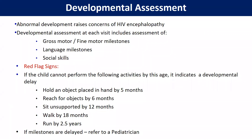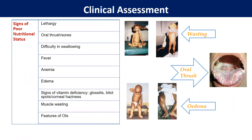There are some red flag developmental signs — if a child cannot hold an object placed in the hand by five months, or cannot reach out for an object by six months, or cannot run by two and a half years. These are all red flag signs and should be taken care of. If not detected early, the child will be developmentally delayed. So if developmental milestones are delayed, we should refer to a pediatrician. After growth and development, we proceed to clinical assessment.